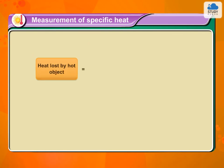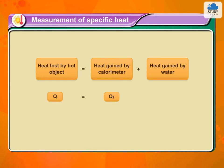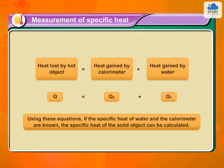Heat lost by hot object is equal to heat gained by calorimeter plus heat gained by water. Q is equal to Q2 plus Q1. Using these equations, if the specific heat of water and the calorimeter are known, the specific heat of the solid object can be calculated.